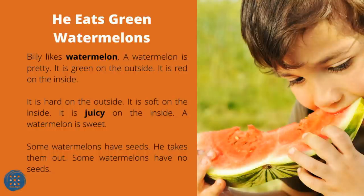He Eats Green Watermelons. Billy likes watermelon. A watermelon is pretty — it is green on the outside and red on the inside. It is hard on the outside and soft and juicy on the inside. A watermelon is sweet. Some watermelons have seeds — he takes them out. Some watermelons have no seeds.